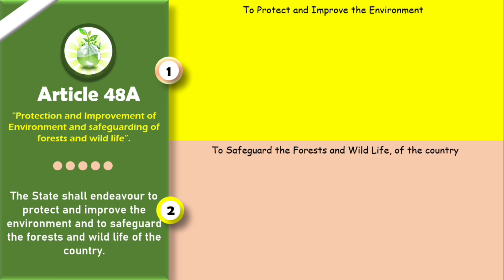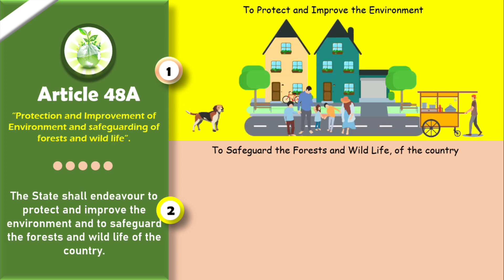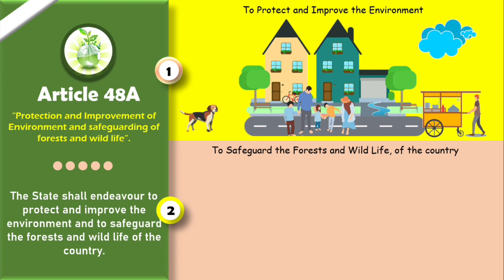Let us understand these two points briefly. The first point talks about protecting and improving the environment. The environment plays an important role in the existence of life. Environment is everything that is around us, which includes both living and non-living things such as air, land, water, food, human beings, animals, and plants. We all are dependent on the environment for food, air, water, and other needs. So it is very important to protect and improve the environment.